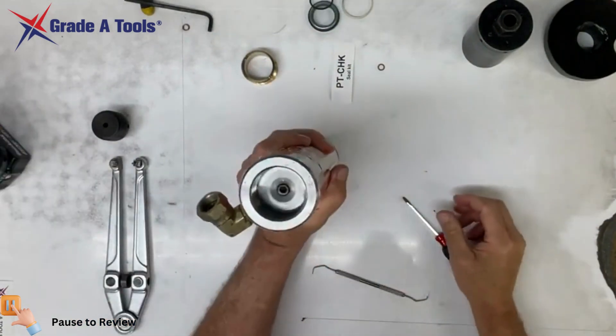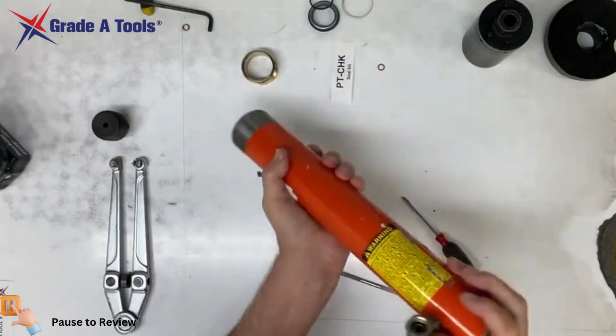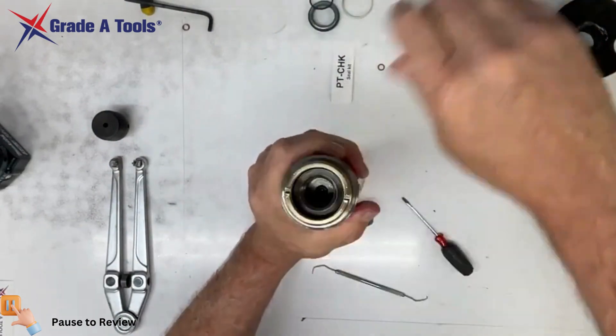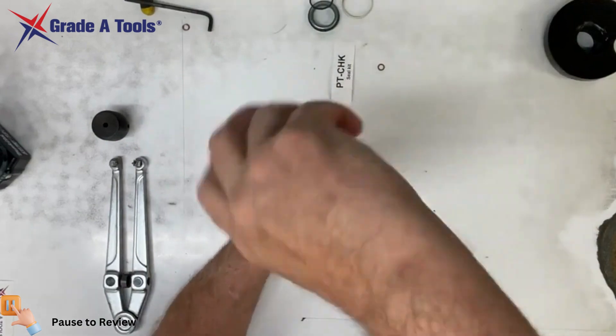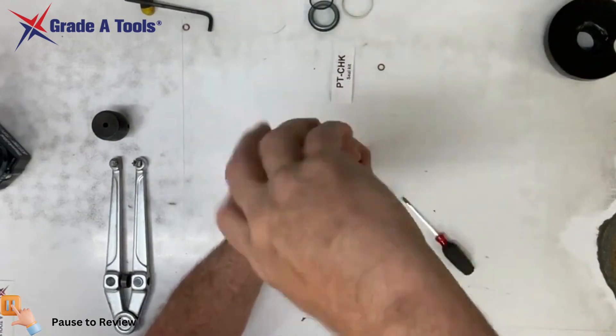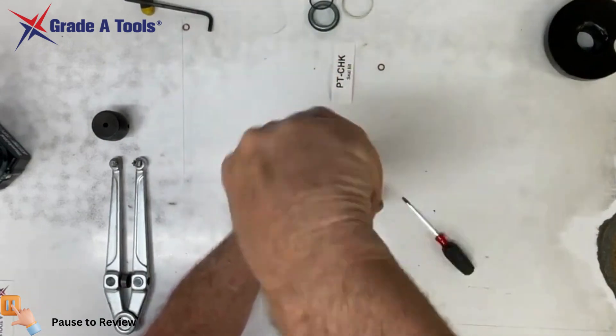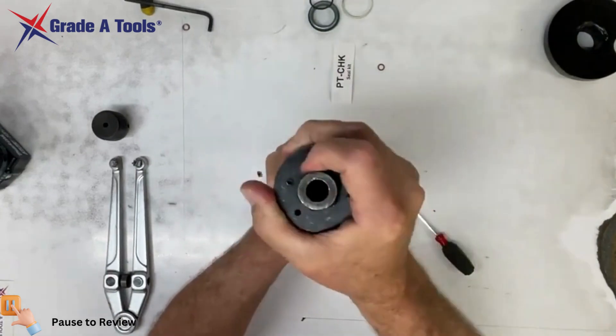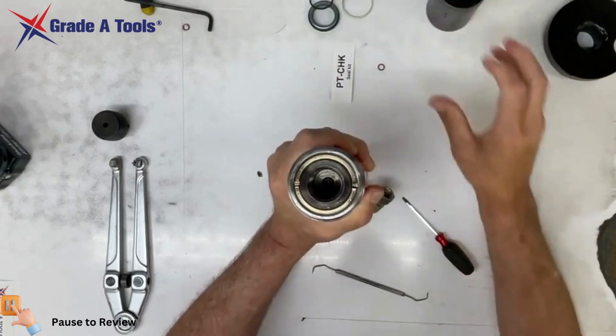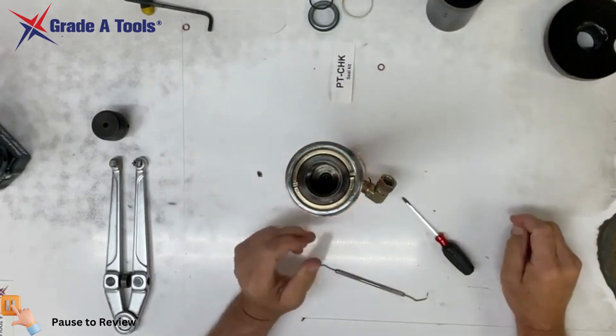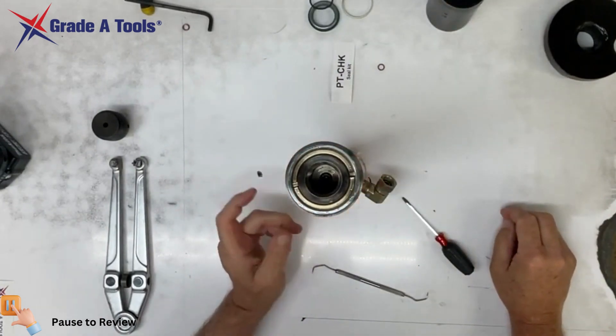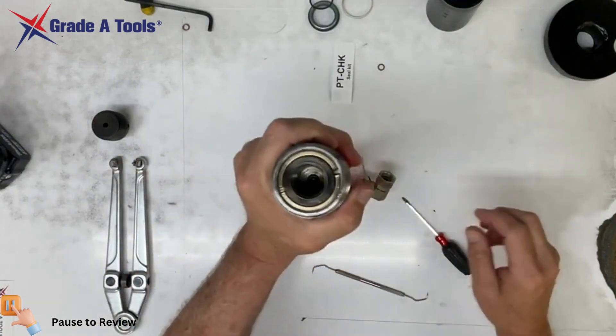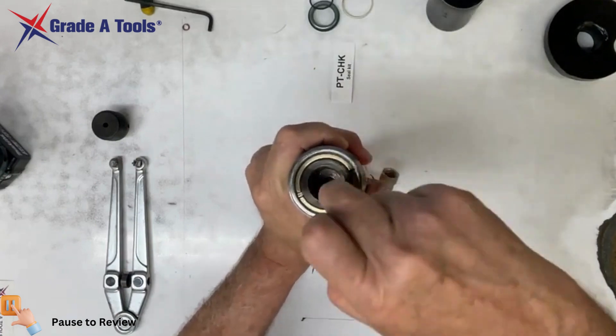At this point you will turn it over, put your threaded washer back in. Now your ram has been overhauled. You'll notice that we did not replace the washer that was in here.